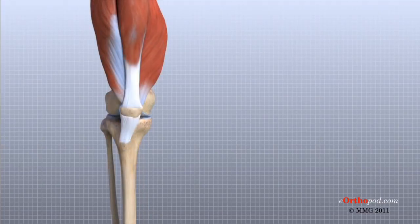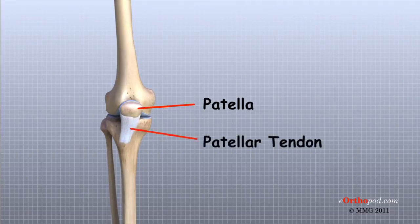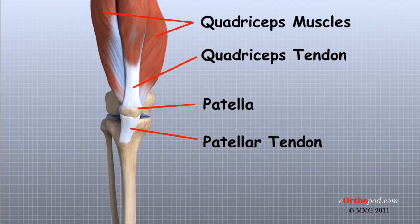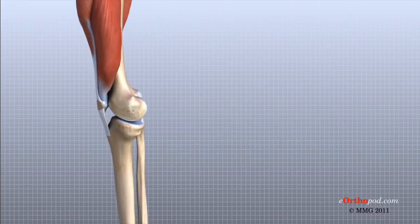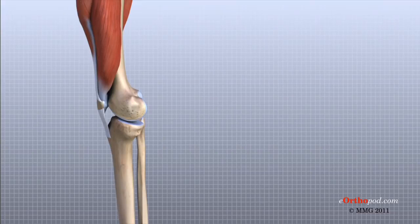The extensor mechanism is the motor that drives the knee joint and allows us to walk. It sits in front of the knee joint and is made up of the patella, the patellar tendon, the quadriceps tendon, and the quadriceps muscles. The four quadriceps muscles in front of the thigh are the muscles that attach to the quadriceps tendon. When these muscles contract, they straighten the knee joint, such as when you get up from a squatting position.